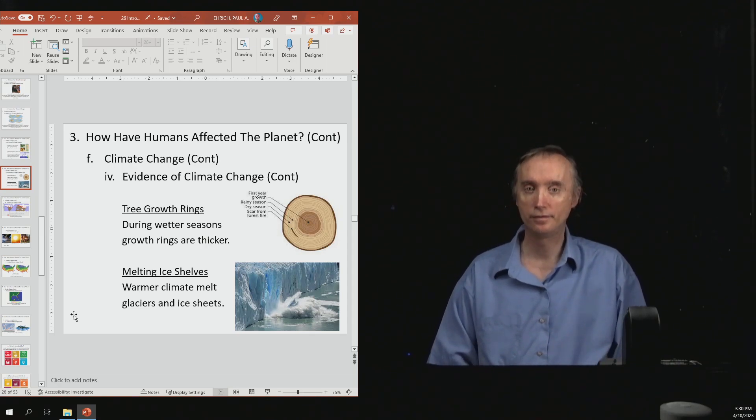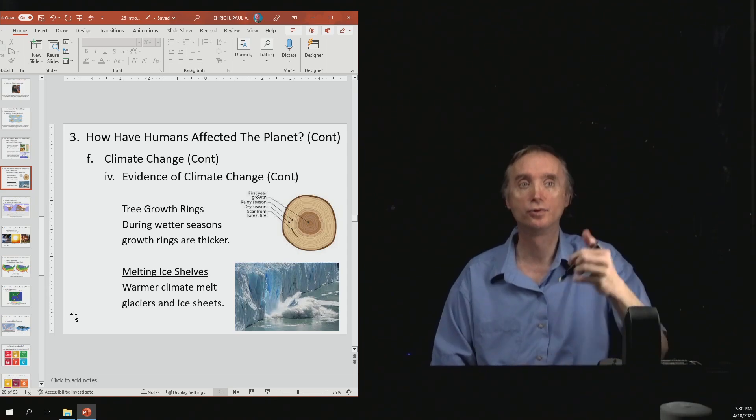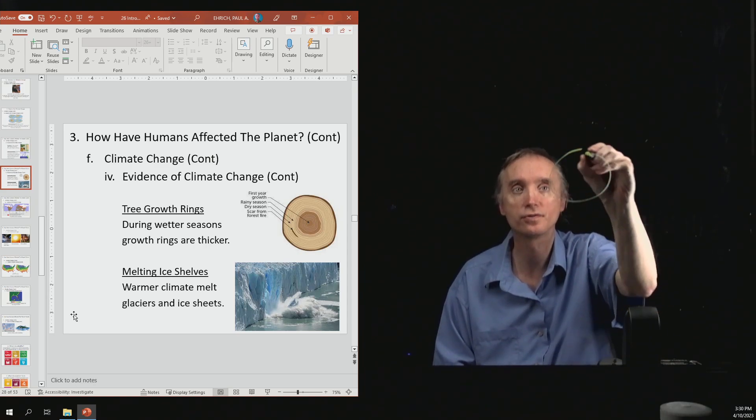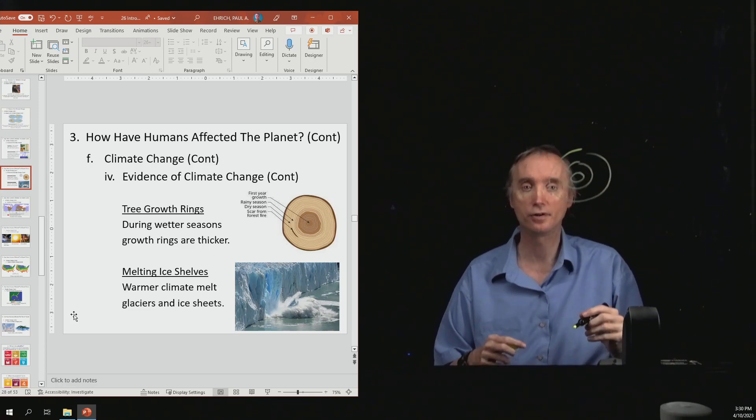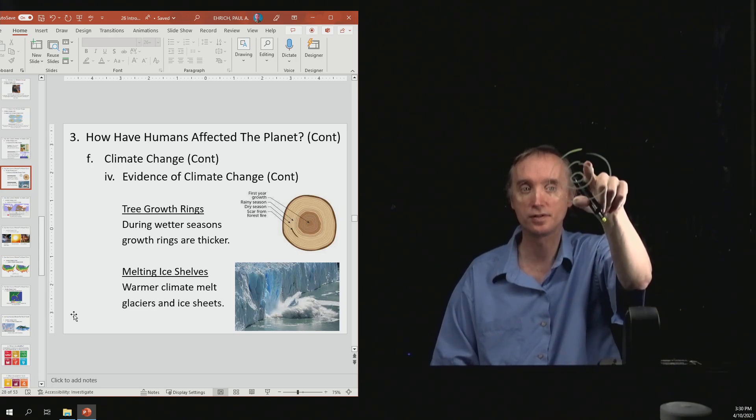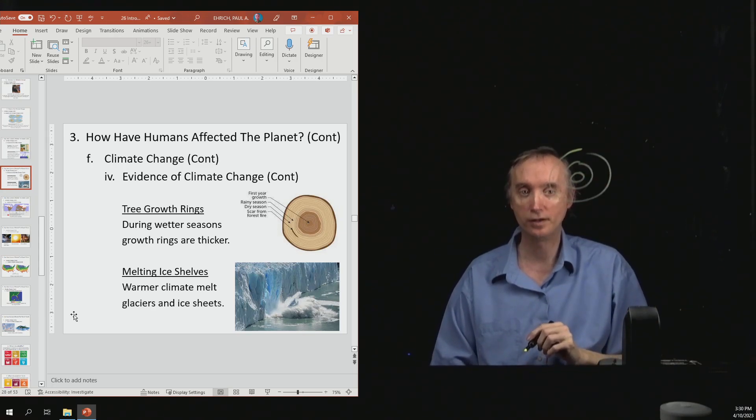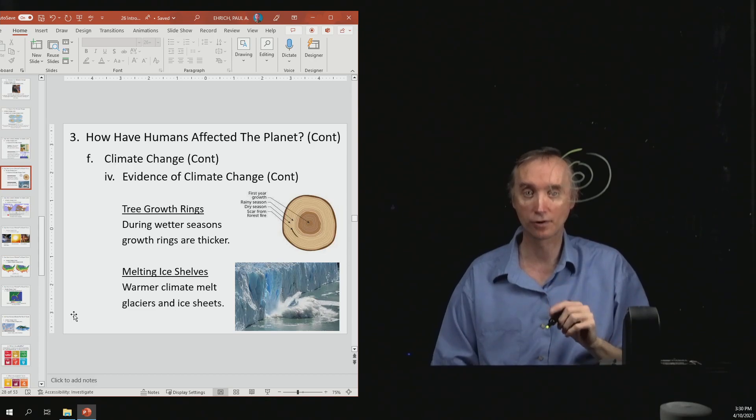We want to continue talking about evidence for climate change, and now we want to talk about tree rings. If you cut down a tree, you will notice that a tree has rings. It has a ring for every year that it was alive. The thickness of those tree rings is an indicator of how much rainfall occurred for that growing season. So you can see if a tree had a dry season or if it had a wet season by looking at its tree rings.